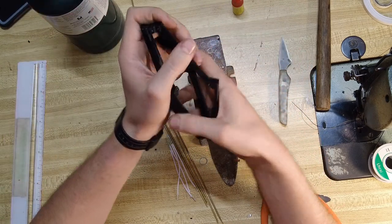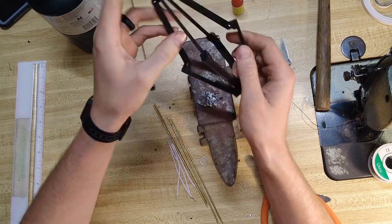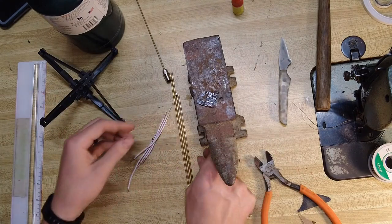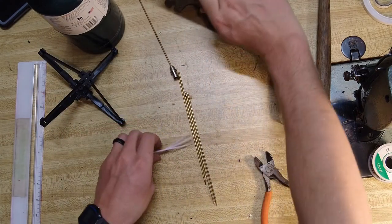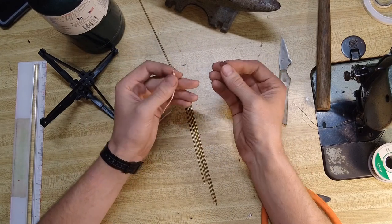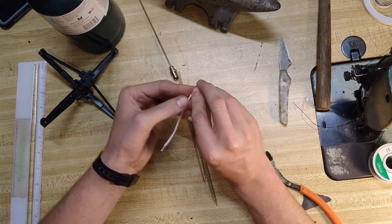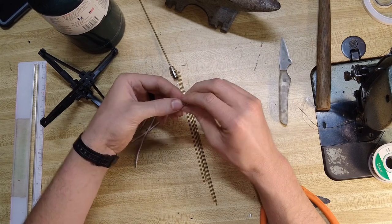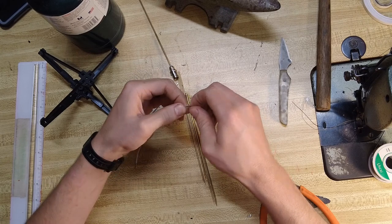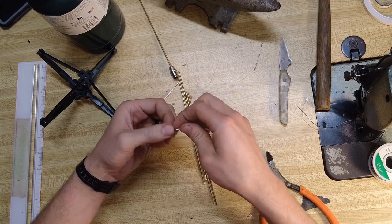We're just going to set that aside for a minute because next we're going to take our four wires and each one of these at the long end we're going to wrap around inside of this little lock ring and twist it once and we're going to put them opposite sides of each other.